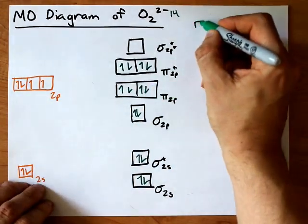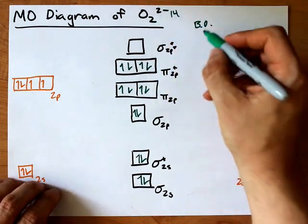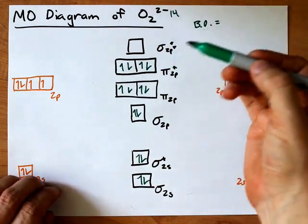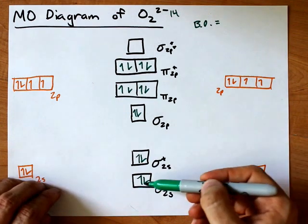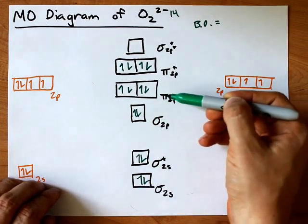Let's calculate the bond order for this species. It is the number of electrons in bonding orbitals, 1, 2, 3, 4, 5, 6, 7, 8.